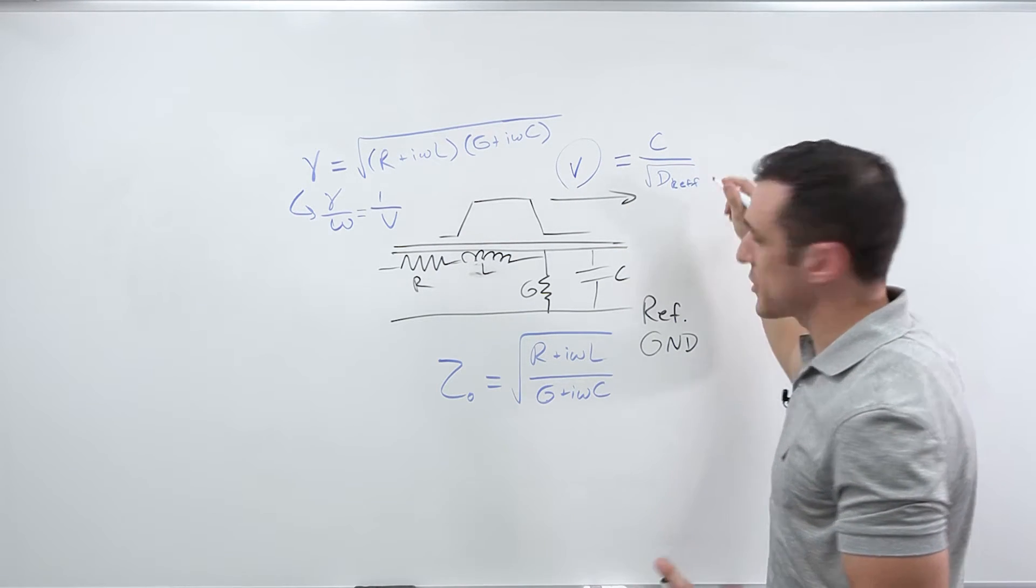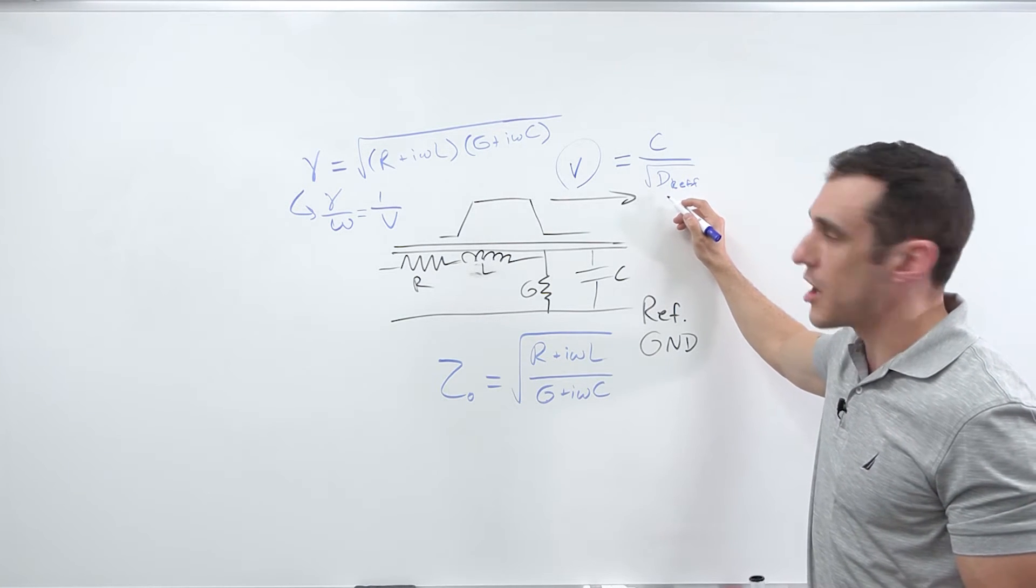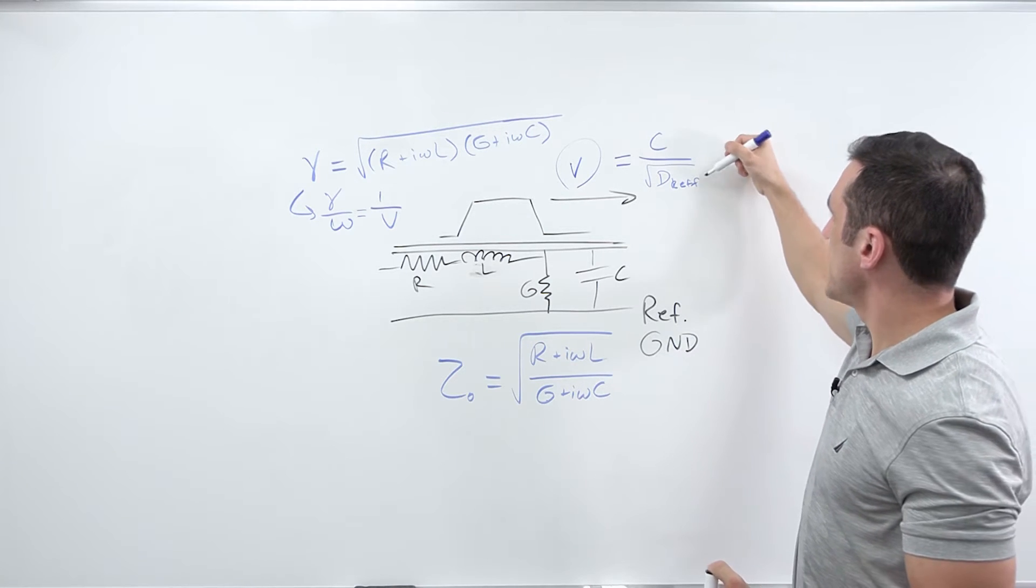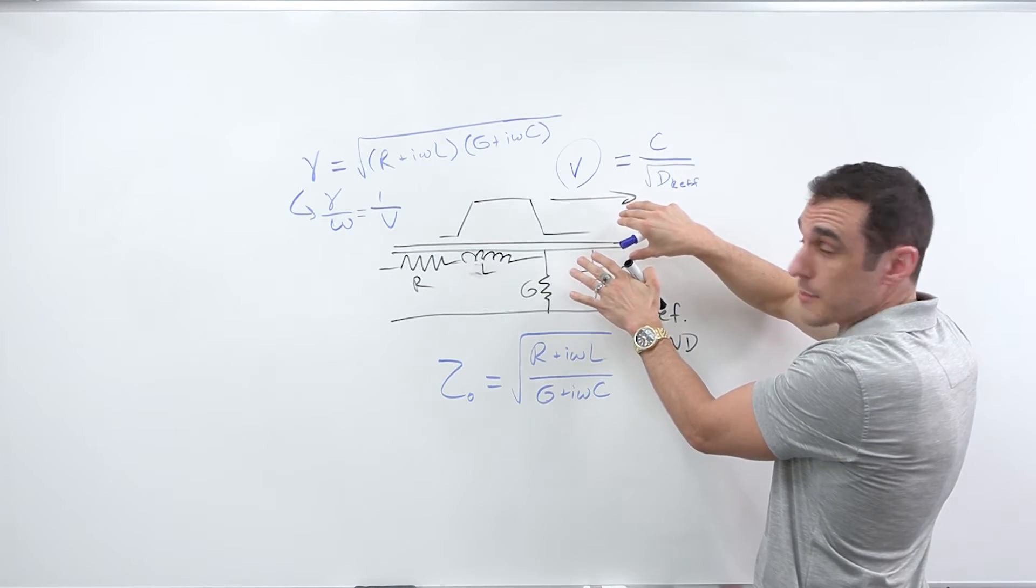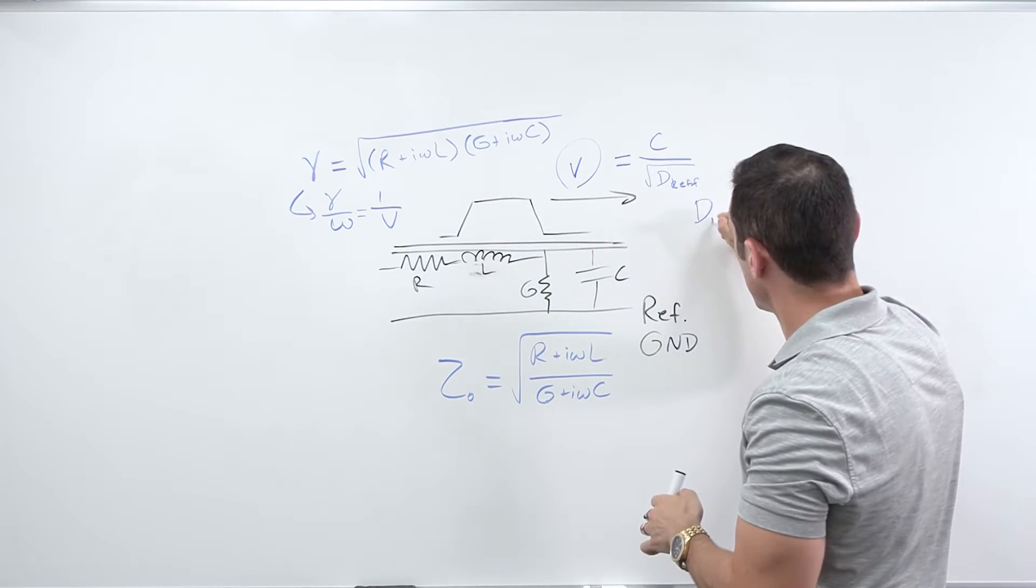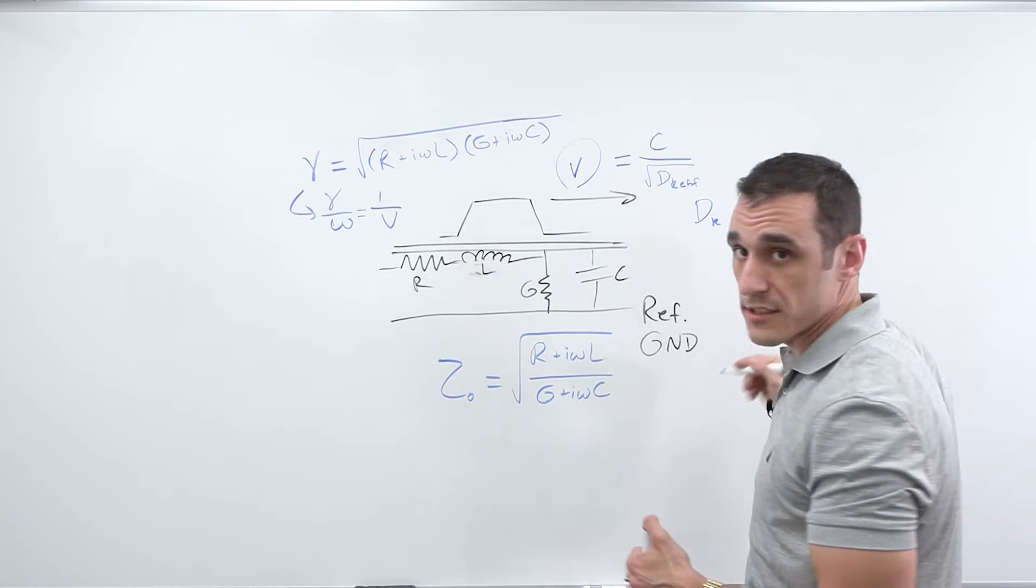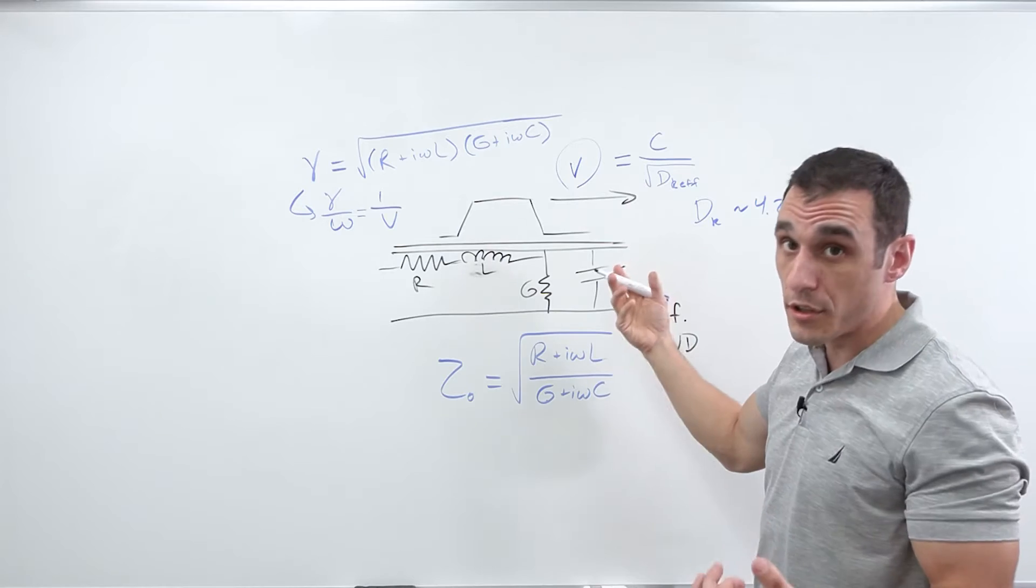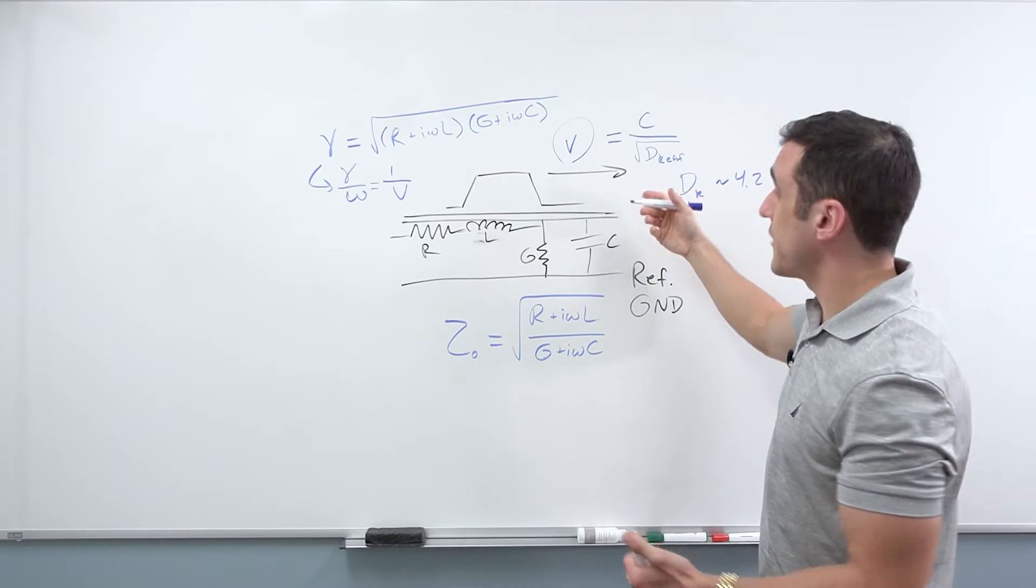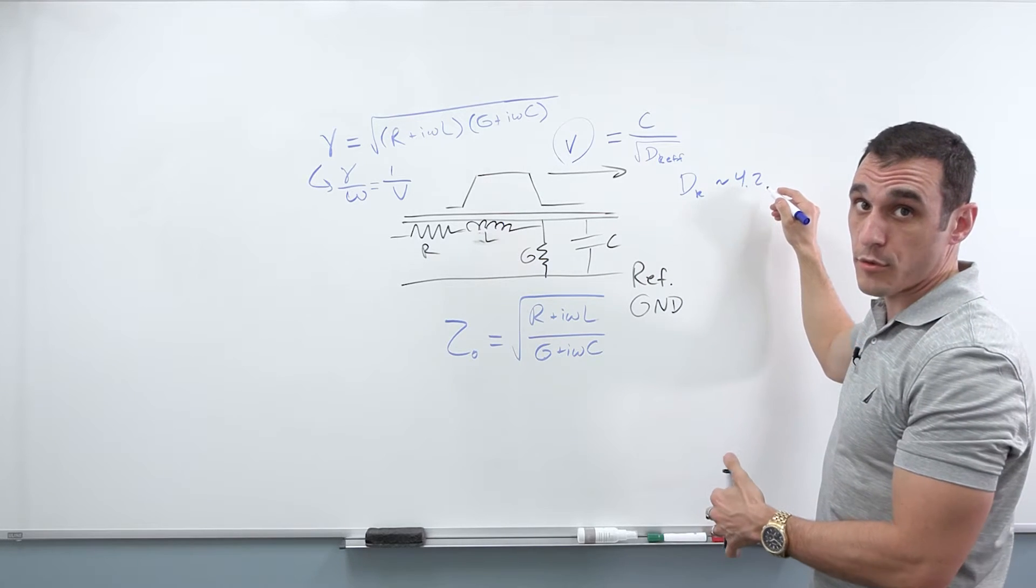So if you're an electrical engineer, if you're working in the PCB space, usually use DK to represent the dielectric constant. And the effective part just accounts for the fact that if this is a microstrip, DK might be four or 4.2, let's say for like an isola laminate, DK might be 4.2 for the PCB substrate, but the real DK value that affects the signal propagation speed might not actually be 4.2.